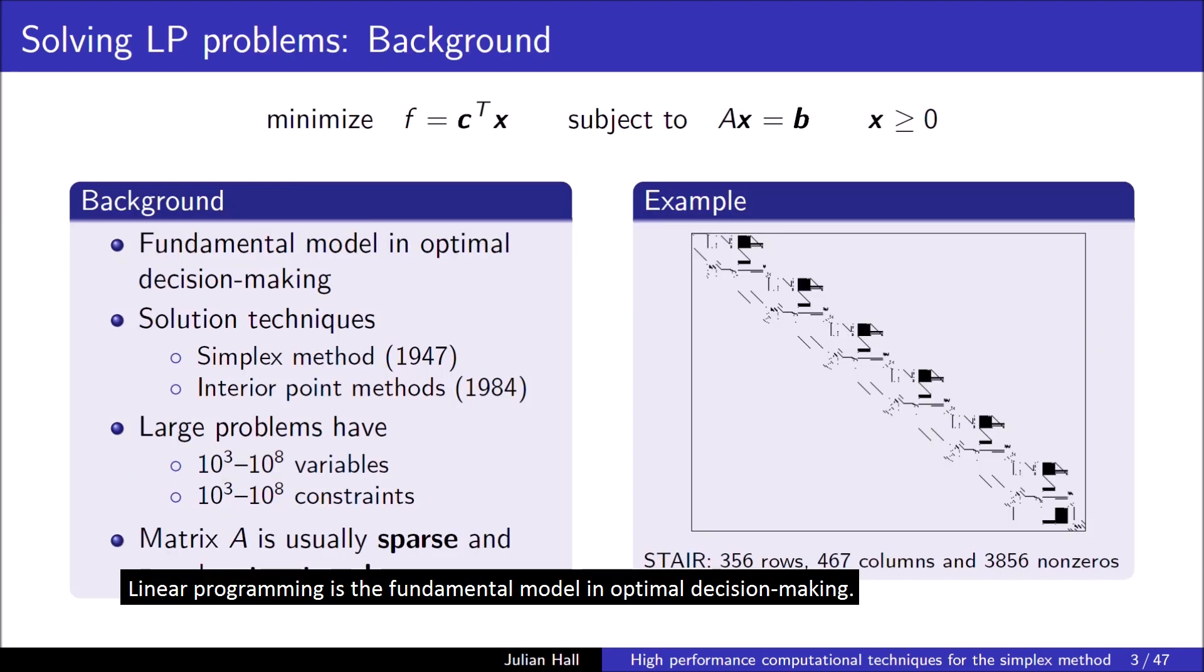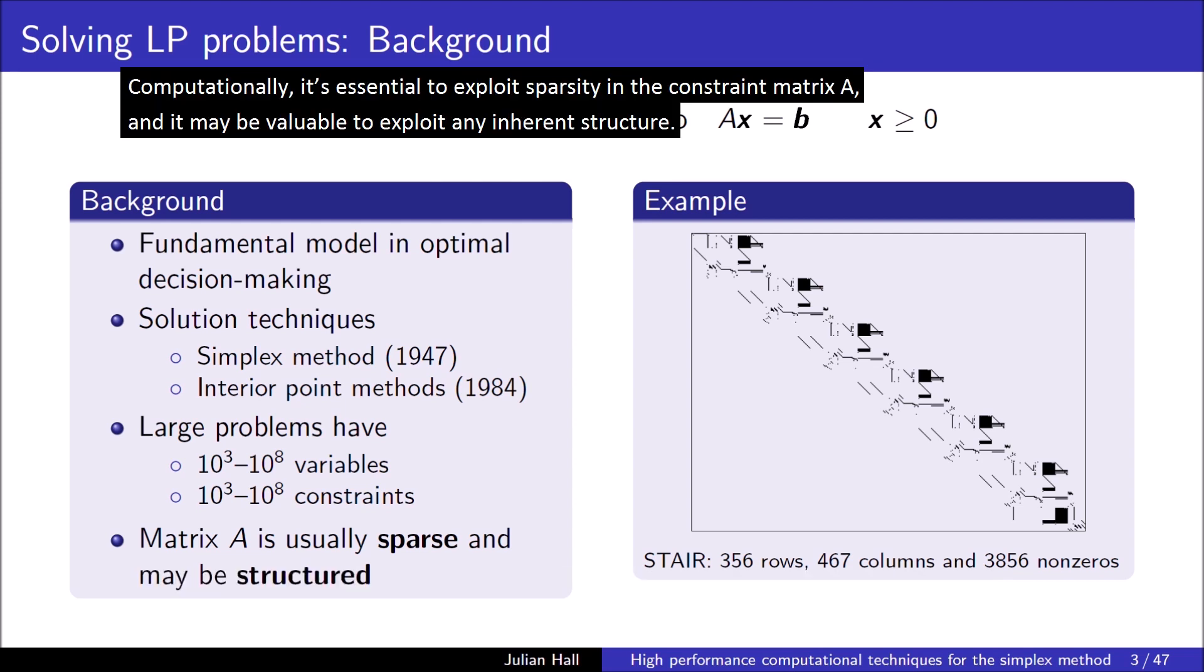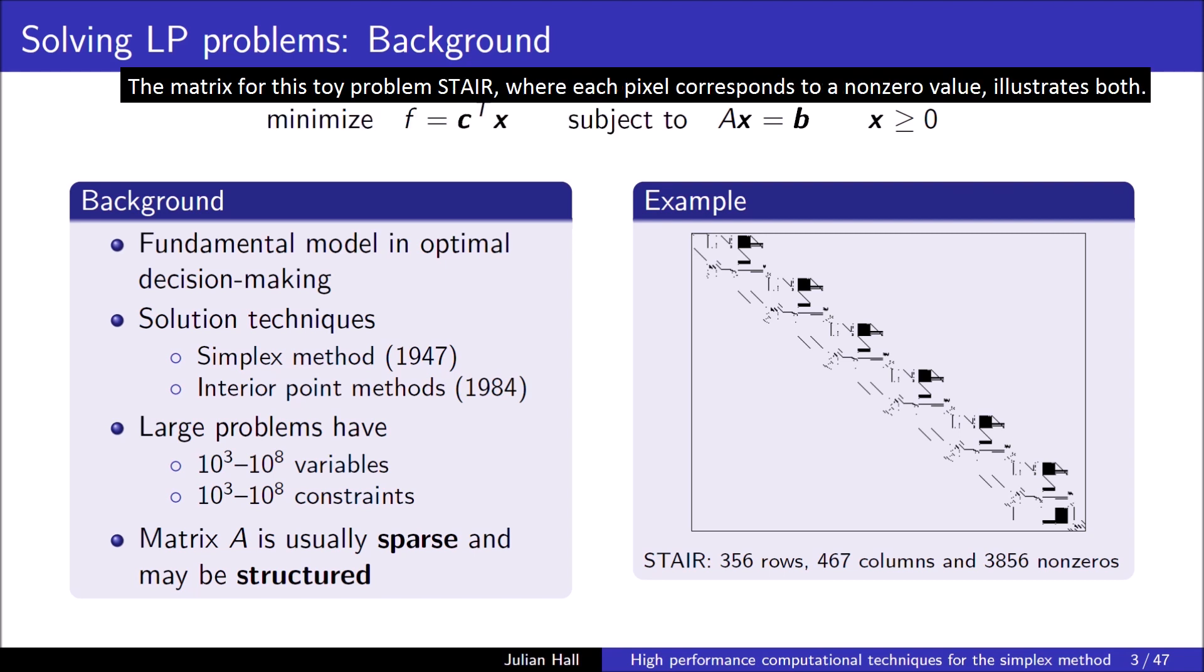Linear programming is the fundamental model in optimal decision making. There are two main solution techniques and both have their places. Large problems can have very different numbers of variables and inequality constraints. Computationally, it's essential to exploit sparsity in the constraint matrix A and it may be valuable to exploit any inherent structure. The matrix for this toy problem stair, where each pixel corresponds to a non-zero value, illustrates both.